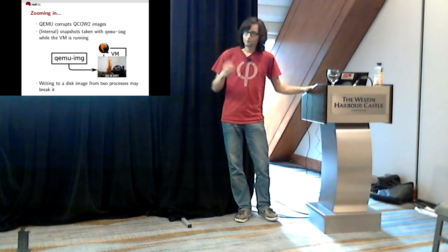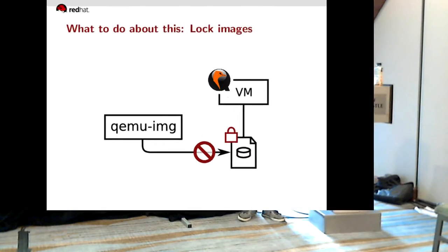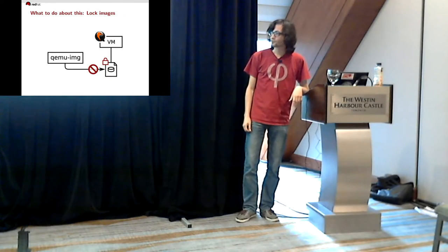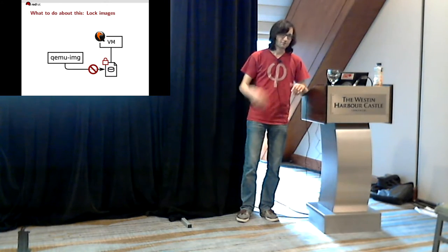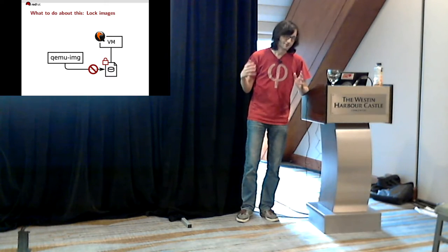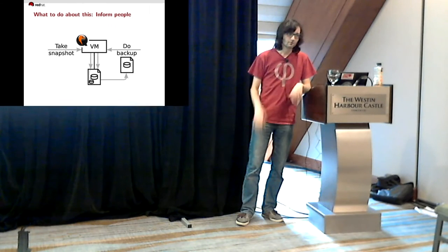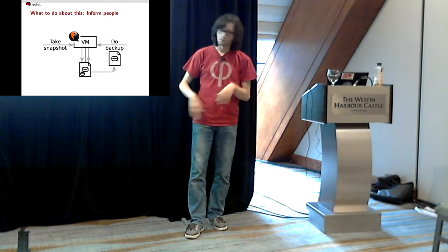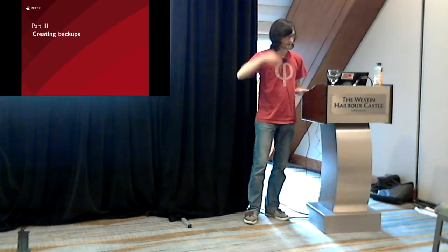Still, QEMU should never corrupt QCOW2 images. The first thing being worked on is image locking — once you attach a disk image to a virtual machine, the QEMU process locks the image so external processes can no longer access it. But that will also prevent people from doing their backups. So we have to do something more positive, which is inform people how to do backups right — which is why this talk exists. It's very simple to just tell the QEMU process itself to take a snapshot and do backups, and it will do that for you.